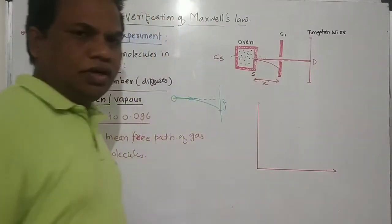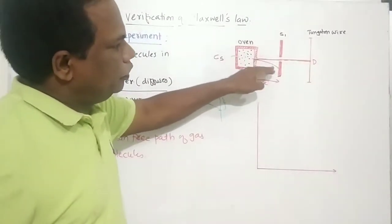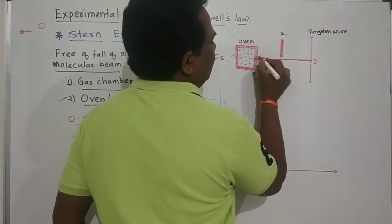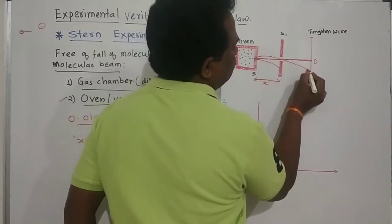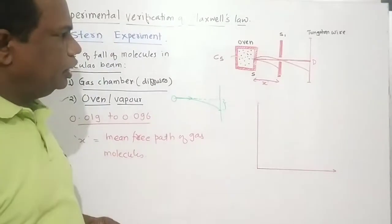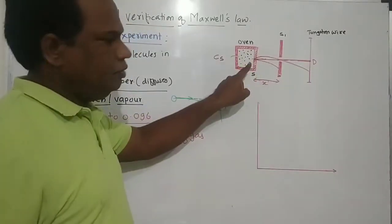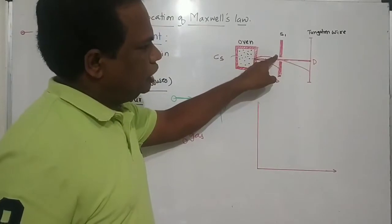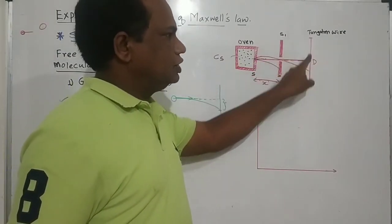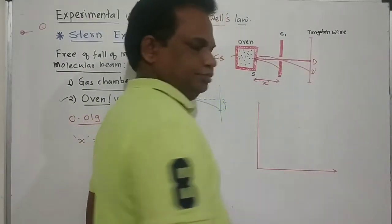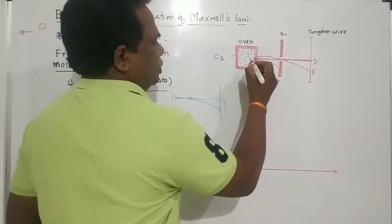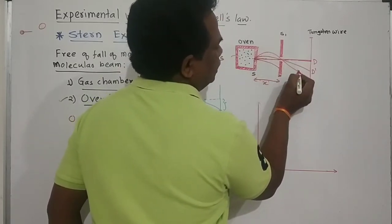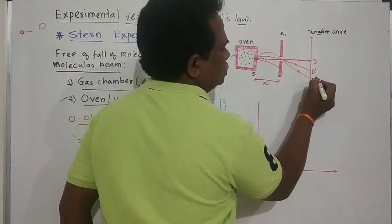So now this is the path of a molecule having very low speed — it falls more due to gravity. A molecule with higher speed travels closer to the straight-line reference path and falls on the tungsten wire at point D or nearby.